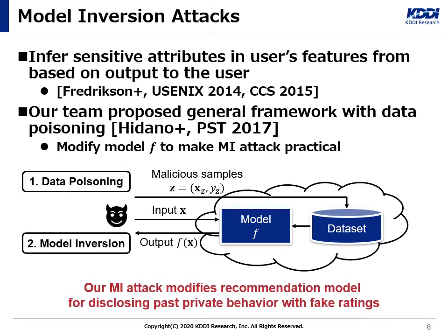In previous work, our team proposed a new type of model inversion attacks targeting dynamic prediction systems. The adversary modifies the system's model by data poisoning in order to make the inference practical. Specifically, the adversary first injects carefully crafted malicious data into the dynamic model so that the current model will be updated to a target model. As a result, the adversary can infer sensitive information by only observing the output of the target model. We follow this approach: in our inference attack for recommendation systems, the adversary modifies the recommendation model with fake ratings so that she will be able to infer past private user behavior.